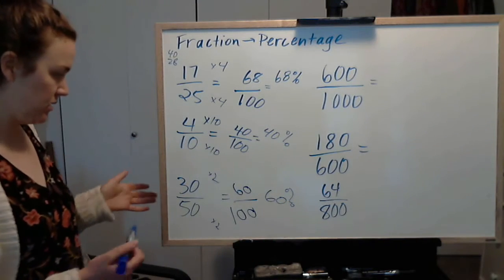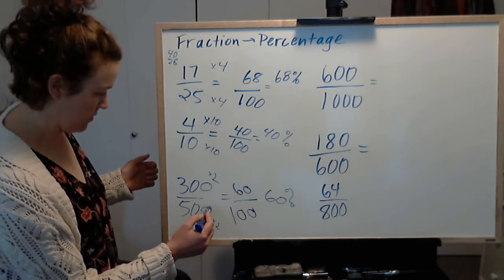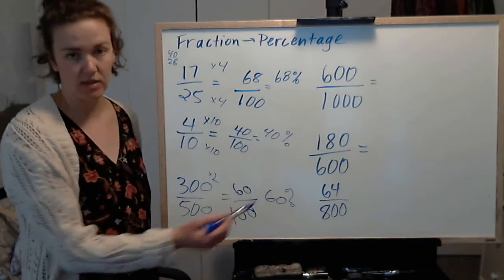30 times 2 is 60. So that means what I had before, 300 out of 500, is equal to 60%.